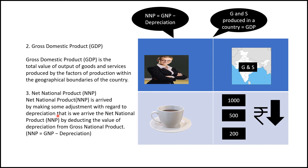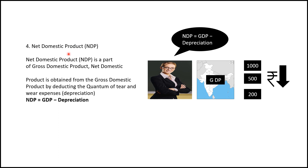Now let's talk about depreciation. Consider a car — in its first year it has a certain market value. Over time, the value decreases — that decrease is called depreciation. Gross National Product minus depreciation gives us Net National Product. GDP minus depreciation gives us NDP. This depreciation adjustment is an important part of calculating national income measures.